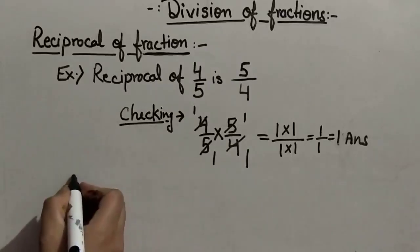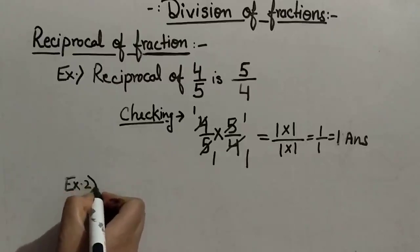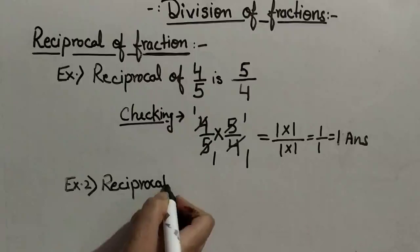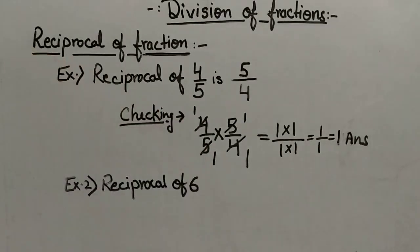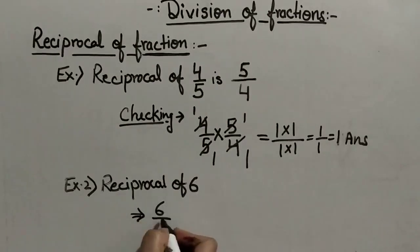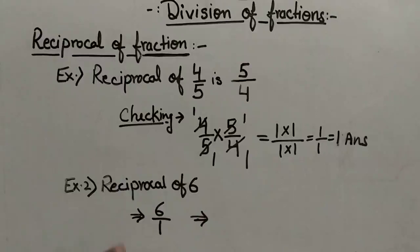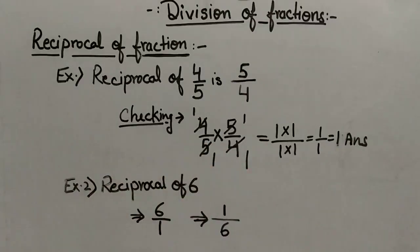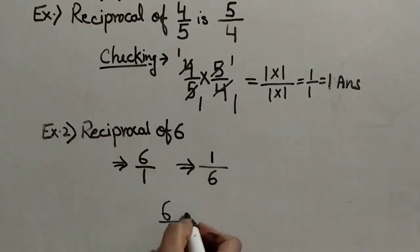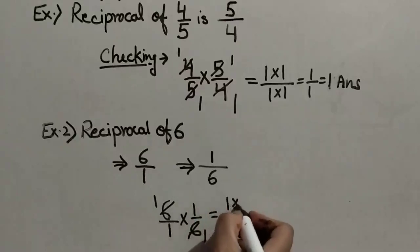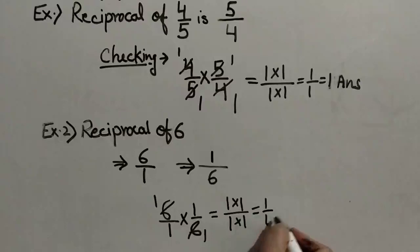Let us see one more example. We write the numerator in place of denominator and the denominator in place of numerator. So, the reciprocal of 6 is 1 upon 6. Now we will check it: 6 upon 1 multiplied by 1 upon 6. 6 ones are 6, giving us 1 multiplied by 1 upon 1 multiplied by 1, equal to 1 upon 1, which is 1.